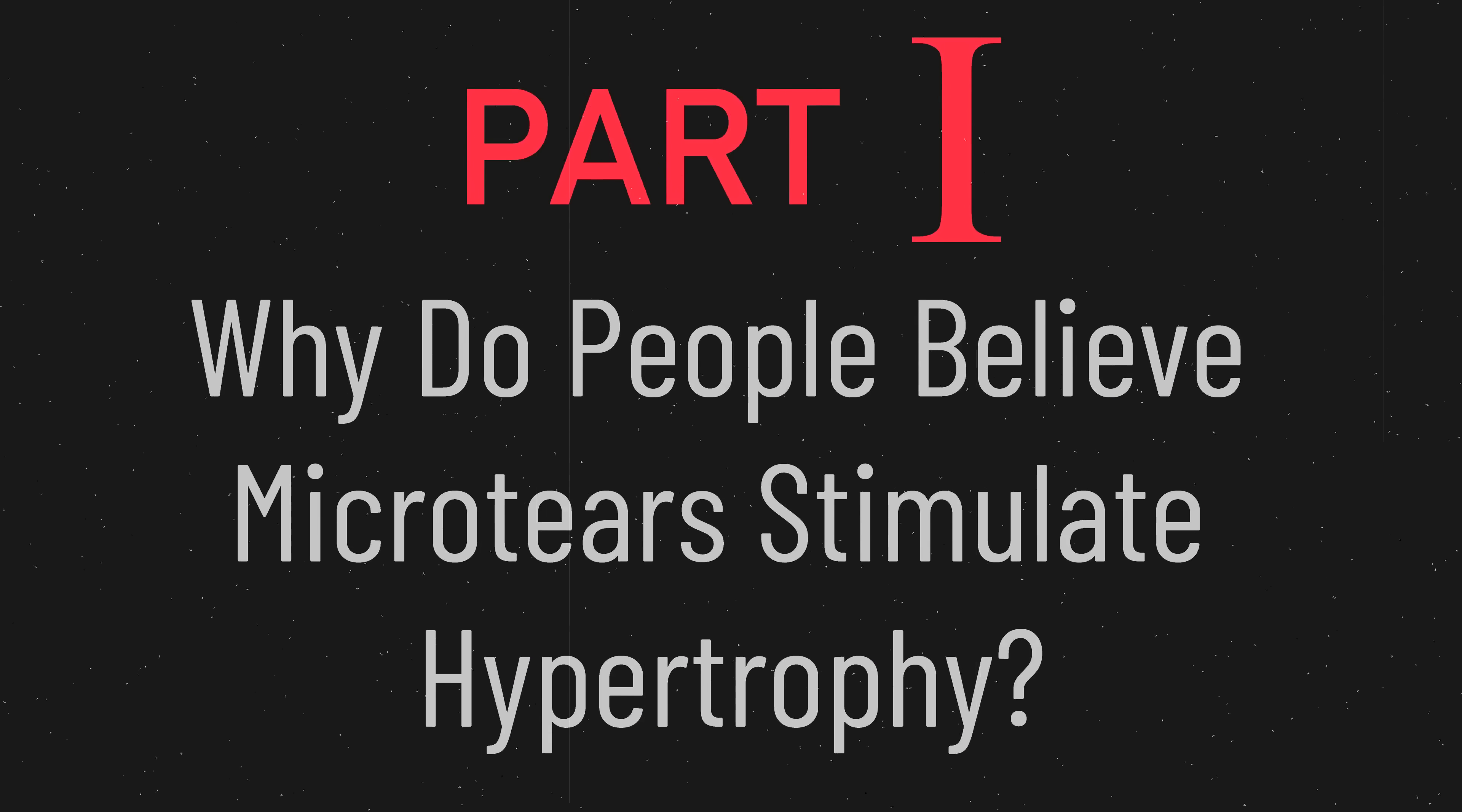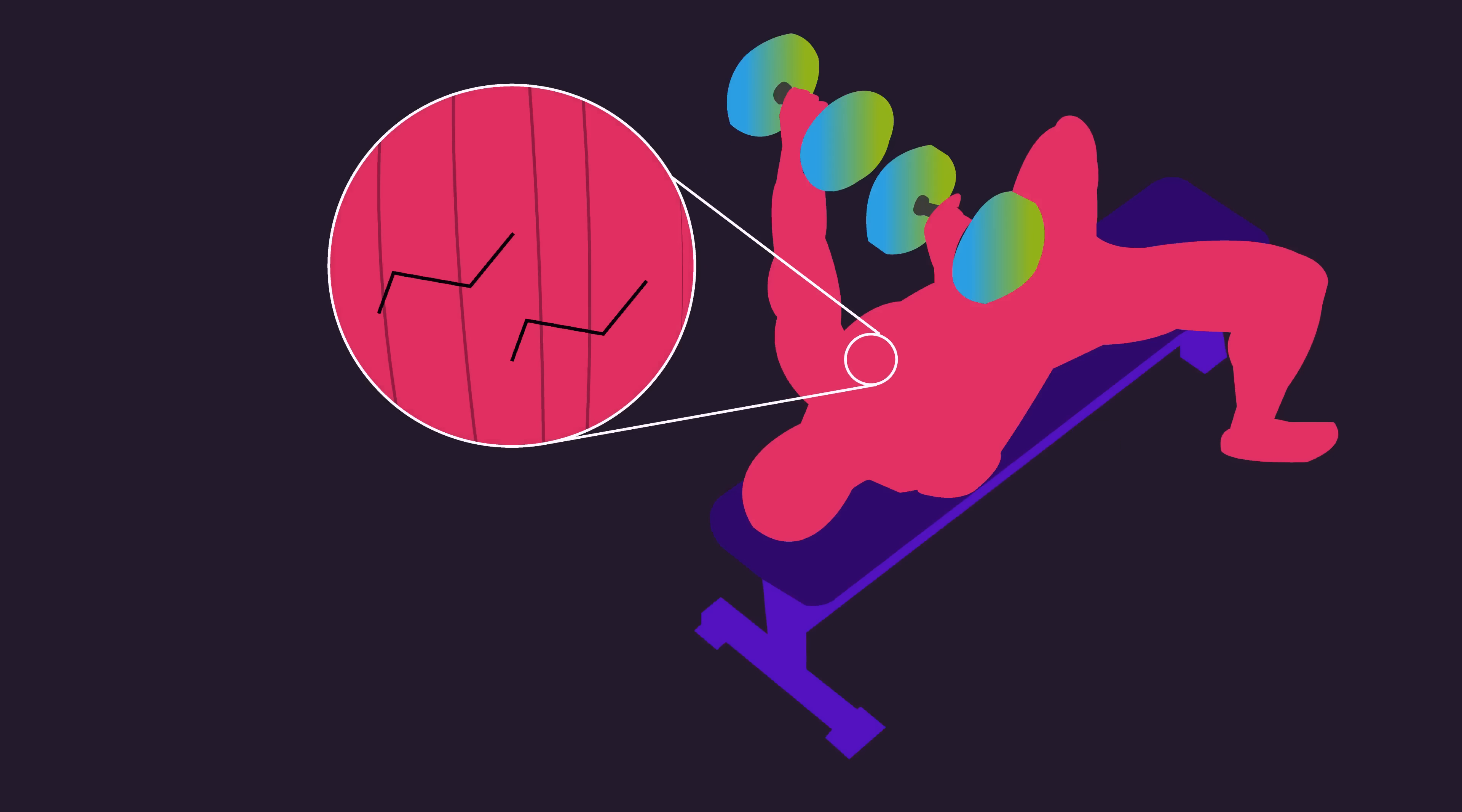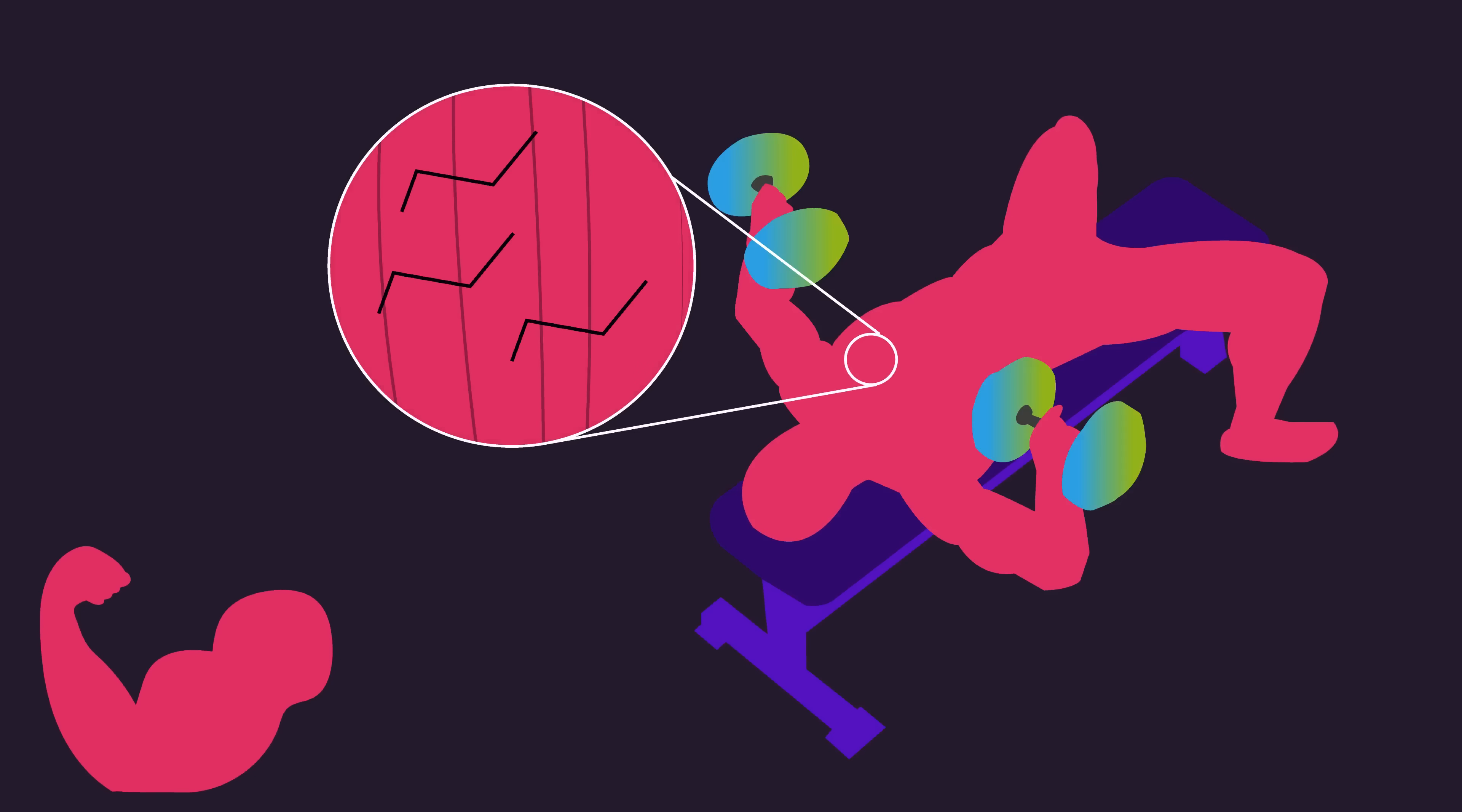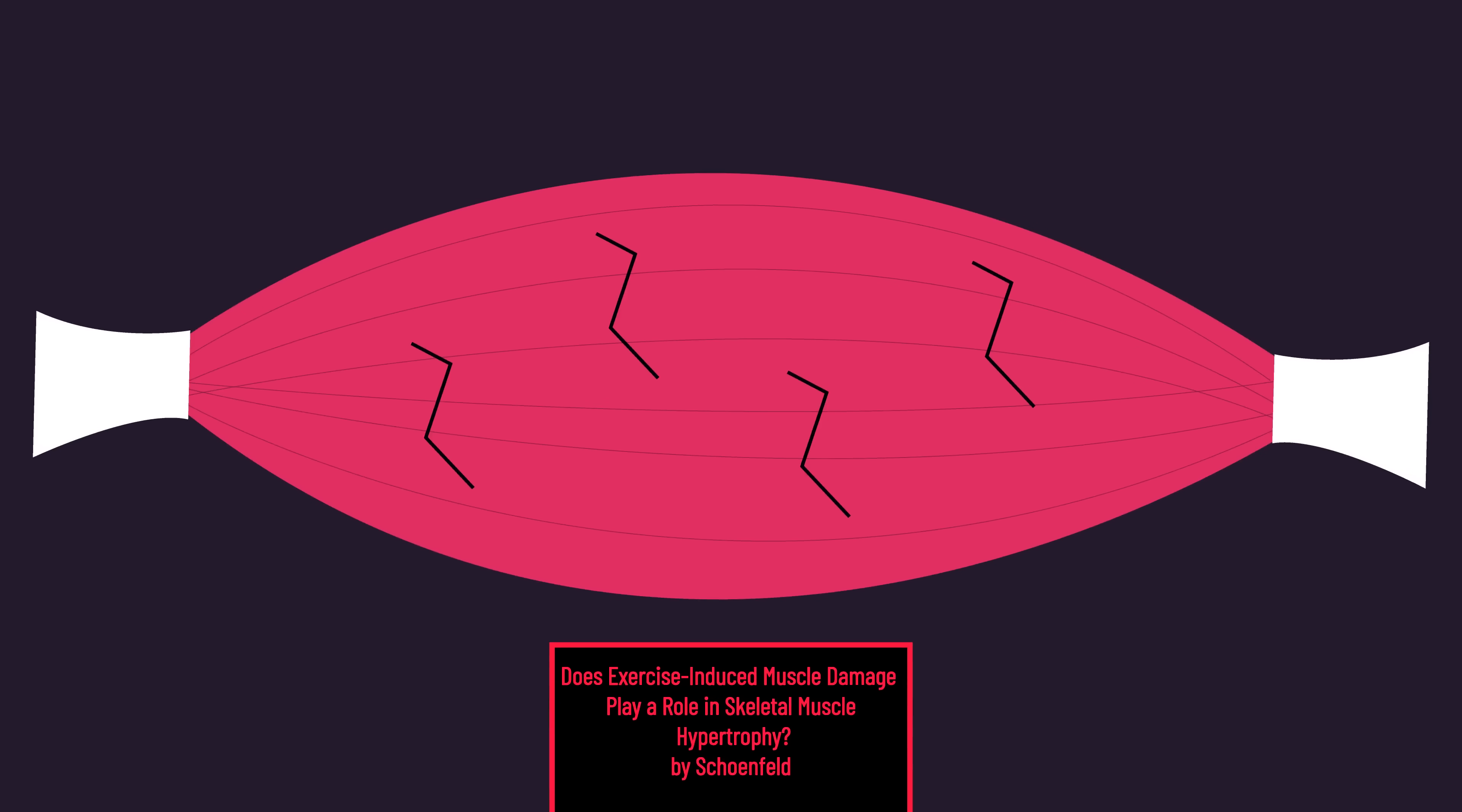Well, let's go ahead and summarize the current literature. People have suggested micro tears drive muscle hypertrophy based on a few different arguments. When muscles get damaged, immune cells called neutrophils travel to the location of damage, primarily removing cellular debris.